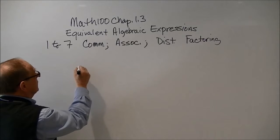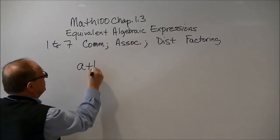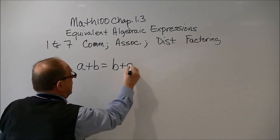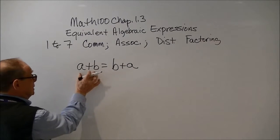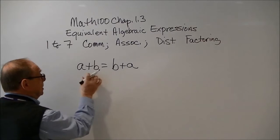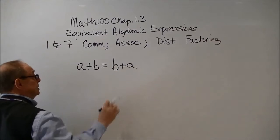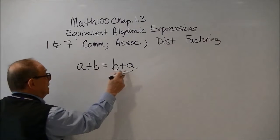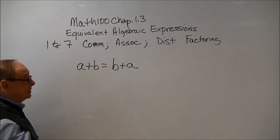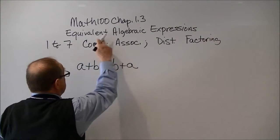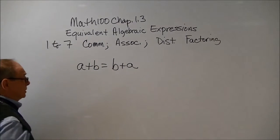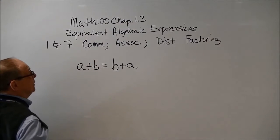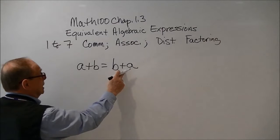So in the commutative law, we have a plus b equals b plus a. Well, they're the same terms, but they're in different order. They've been switched. And we can add a to b or b to a. We get the same answer. That's why they are called equivalent expressions. This is the commutative law of addition because of the plus signs.